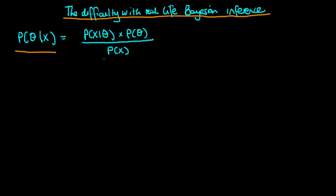The first difficulty that one encounters in doing exact Bayesian inference is that this denominator term is typically very difficult to calculate. Whilst I've spoken about this in other videos, I want to briefly explain why this is difficult to do in practice.